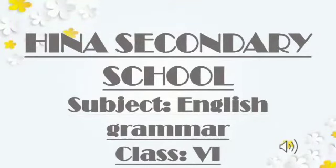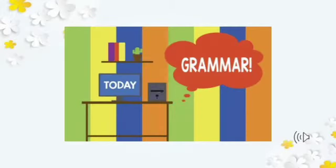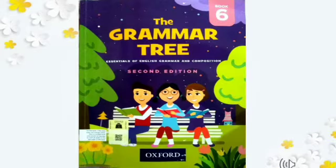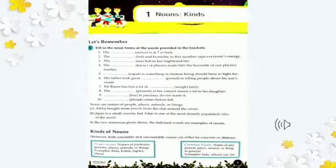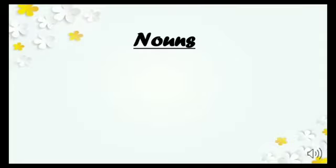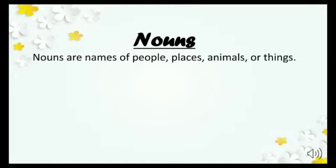Assalamu alaikum, hope you all are good and safe after the heavy rain. We are starting the grammar portion today — your English grammar book, The Grammar Tree by Oxford. It is a new addition to your syllabus this year. We are starting from the very first chapter: Nouns and Kinds of Nouns. As you have already known about nouns, let's revise again.